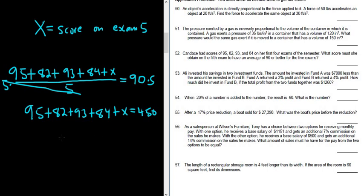OK, I'm going to add these numbers up in my calculator. Let's see, 95 plus 82 plus 93 plus 84. So I got 354 plus x equals 450.